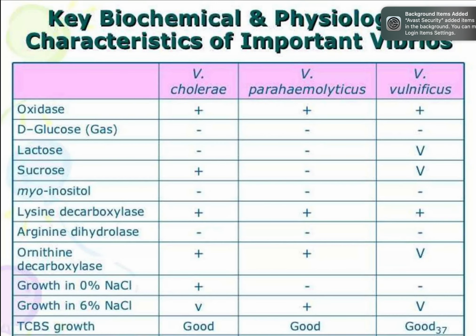These are the biochemical tests that confirm the presence of Vibrio cholerae in a sample. The biochemical profile includes: catalase positive, oxidase positive. They can ferment glucose without gas, mannitol, sucrose, and maltose. They are indole positive, nitrate reduction test is positive, gelatin hydrolysis is positive, and lysine decarboxylase is positive. They are negative for lactose, urease, and VP (Voges-Proskauer).